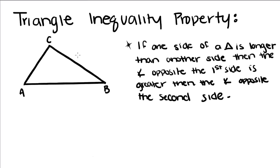So say we know that CB is longer than CA, which we can tell just by looking at it. So that means that this angle, angle A, which is opposite CB, is going to be greater than this angle that's opposite CA, angle B.